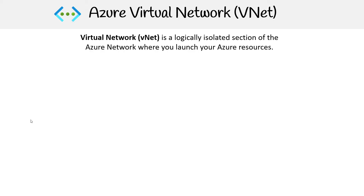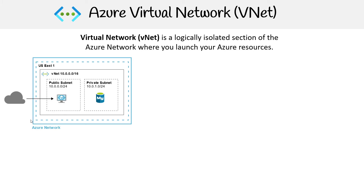Let's talk about networking for Azure. Everything revolves around the virtual network, also known as the VNet. This is a logically isolated section of your Azure network where you launch your Azure resources. Here's a very simple diagram of using VNet.